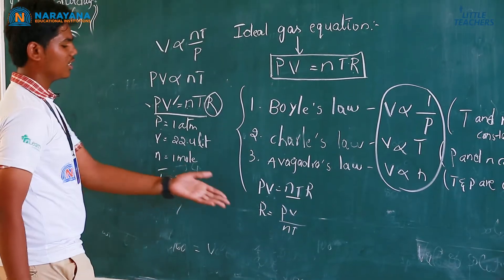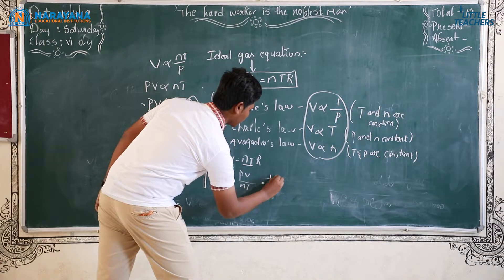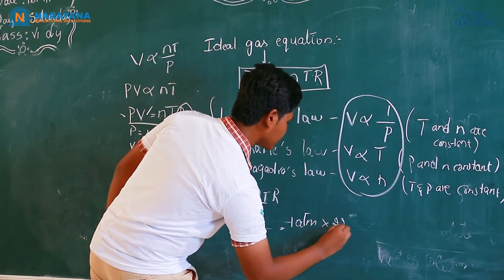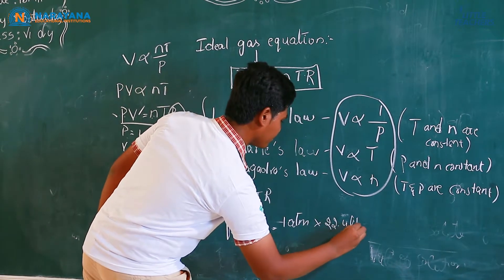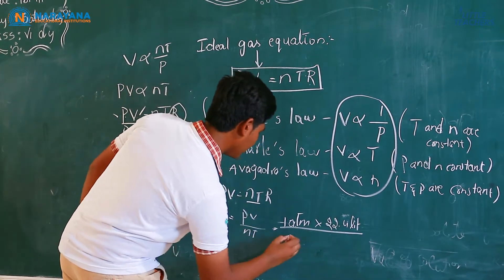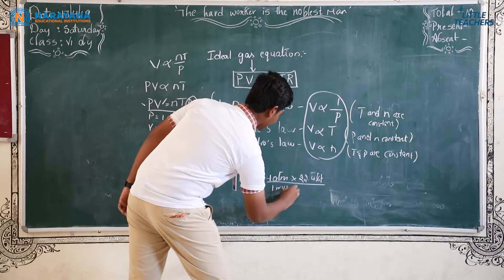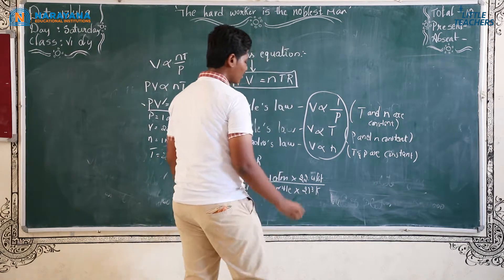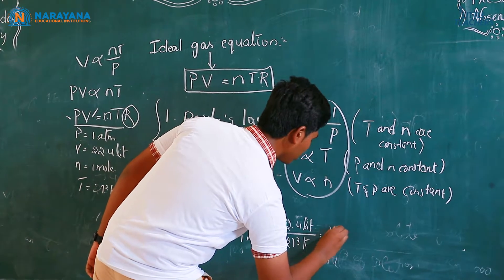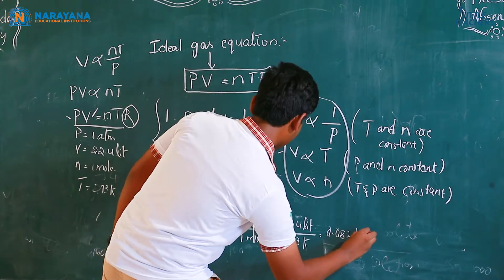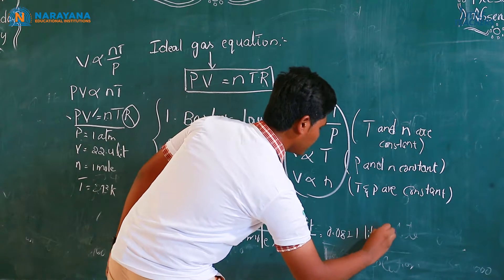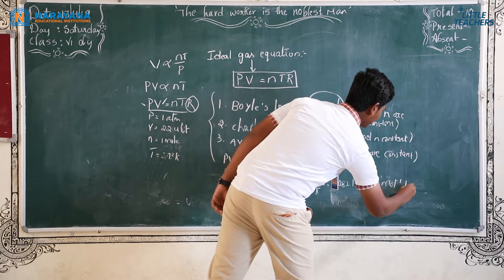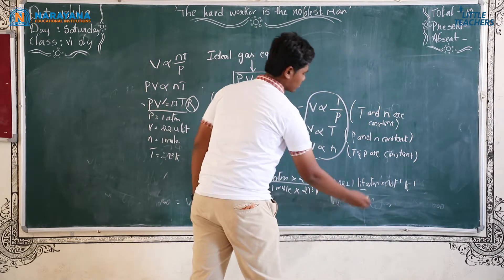Now, substitute the values in this place. The pressure goes to 1 atmosphere into volume 22.4 liters by number of moles, 1 mole into temperature 273 Kelvin. By calculating, we can get 0.0821 liter atmosphere mole inverse Kelvin inverse. 1 liter is equals to 1000 milliliters.